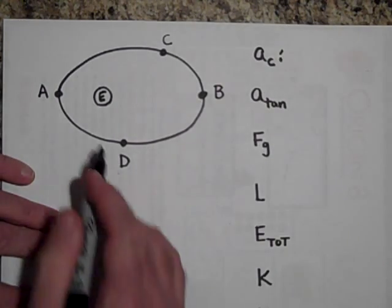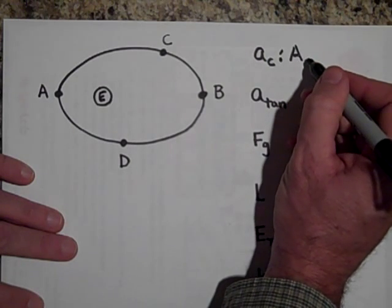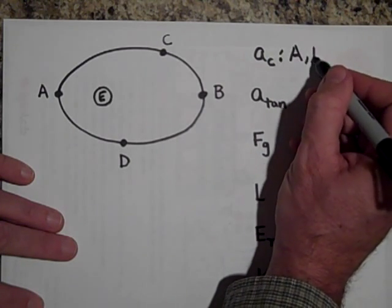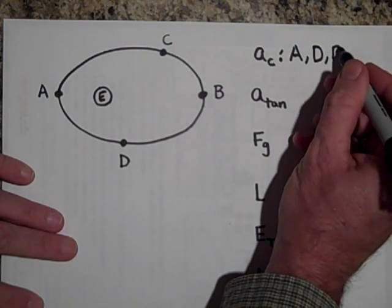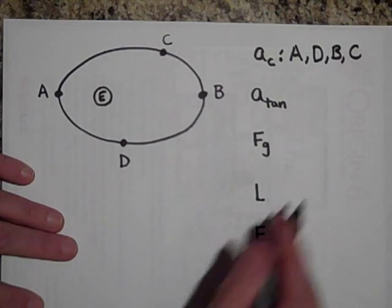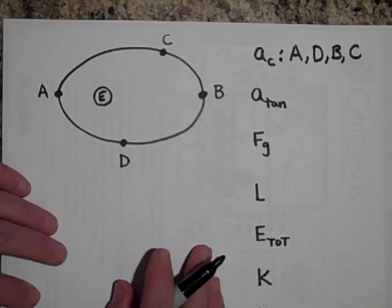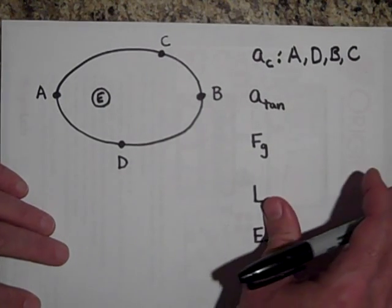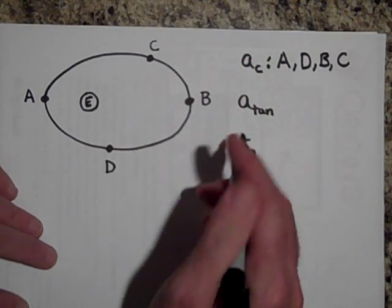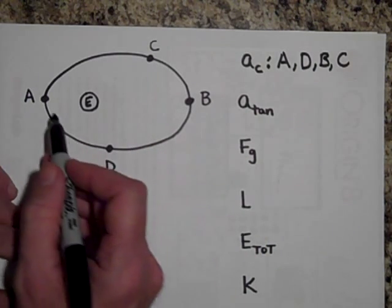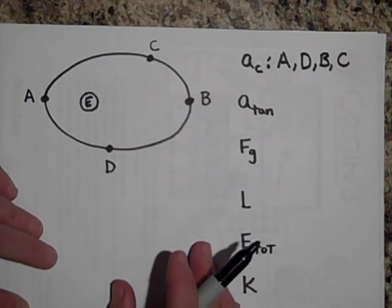Okay, it turns out they all have a centripetal acceleration - A, D, B, and C - because when something has a centripetal acceleration, it's changing its direction, and each one of these is changing its direction.